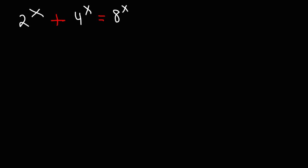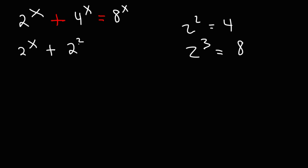The first thing you need to notice with this equation is that all of the bases are multiples of 2. 4 and 8 are multiples of 2. So what we want to do is get a common base. 2 squared, or 2 times 2, is 4. 2 to the third power — that's 2 times 2 times 2 — is 8. So we're going to replace 4 with 2 squared, and replace 8 with 2 to the third power.